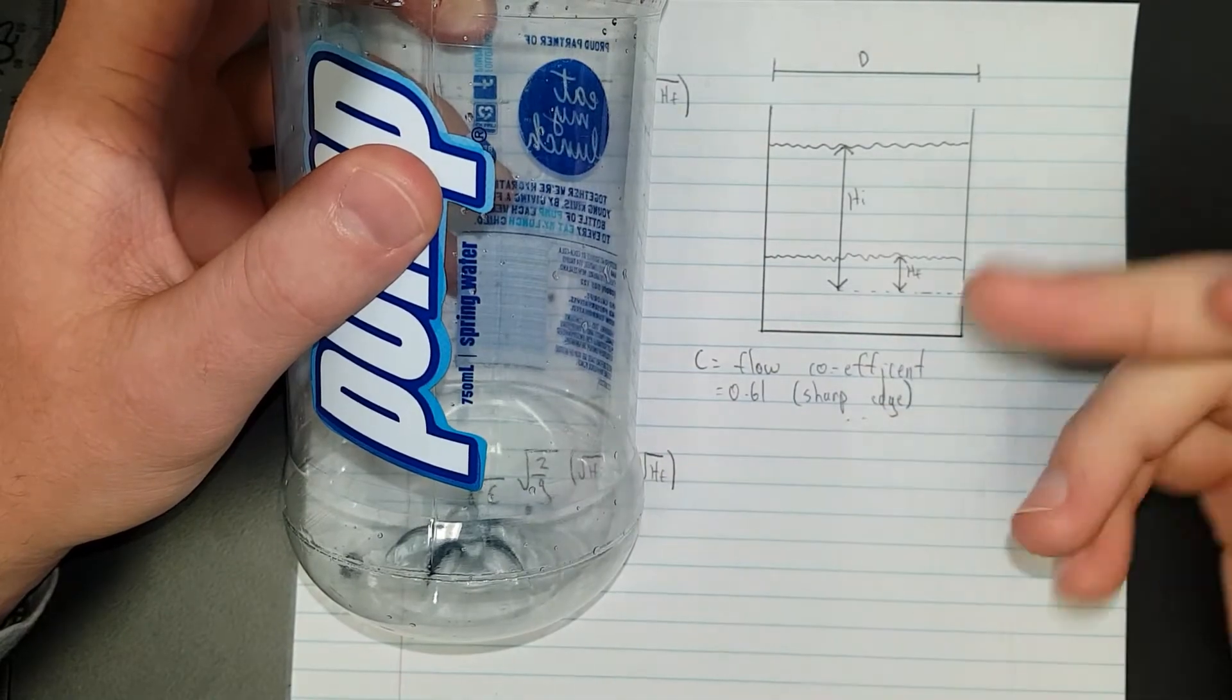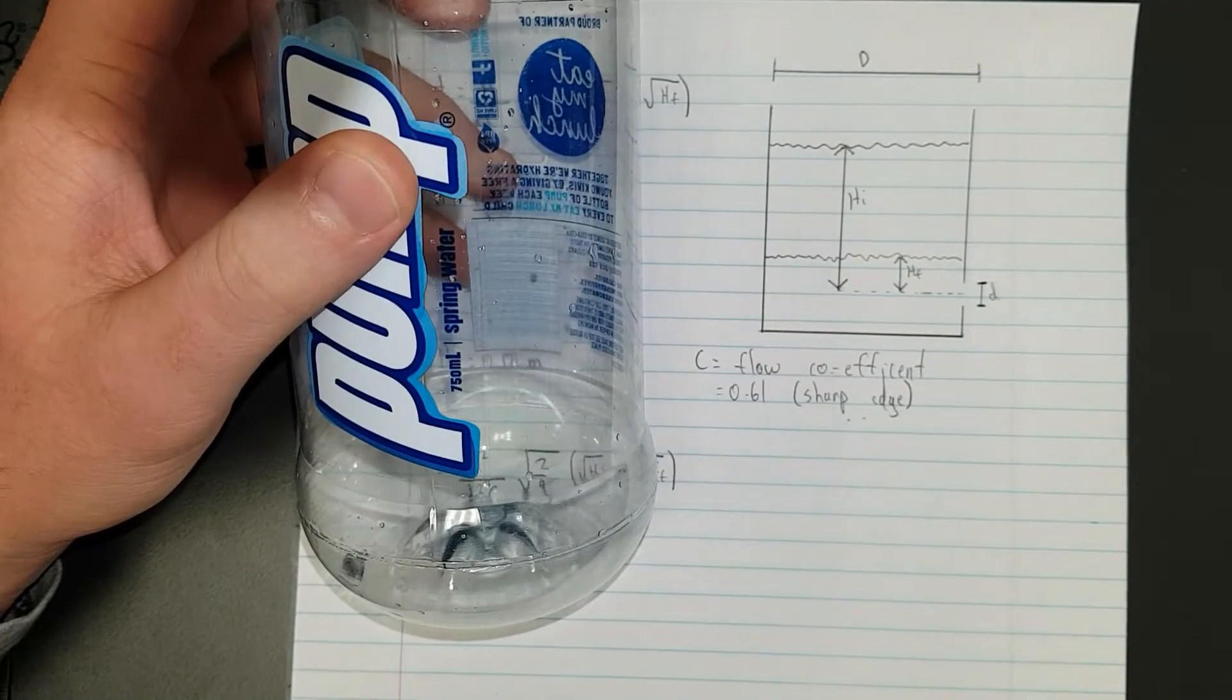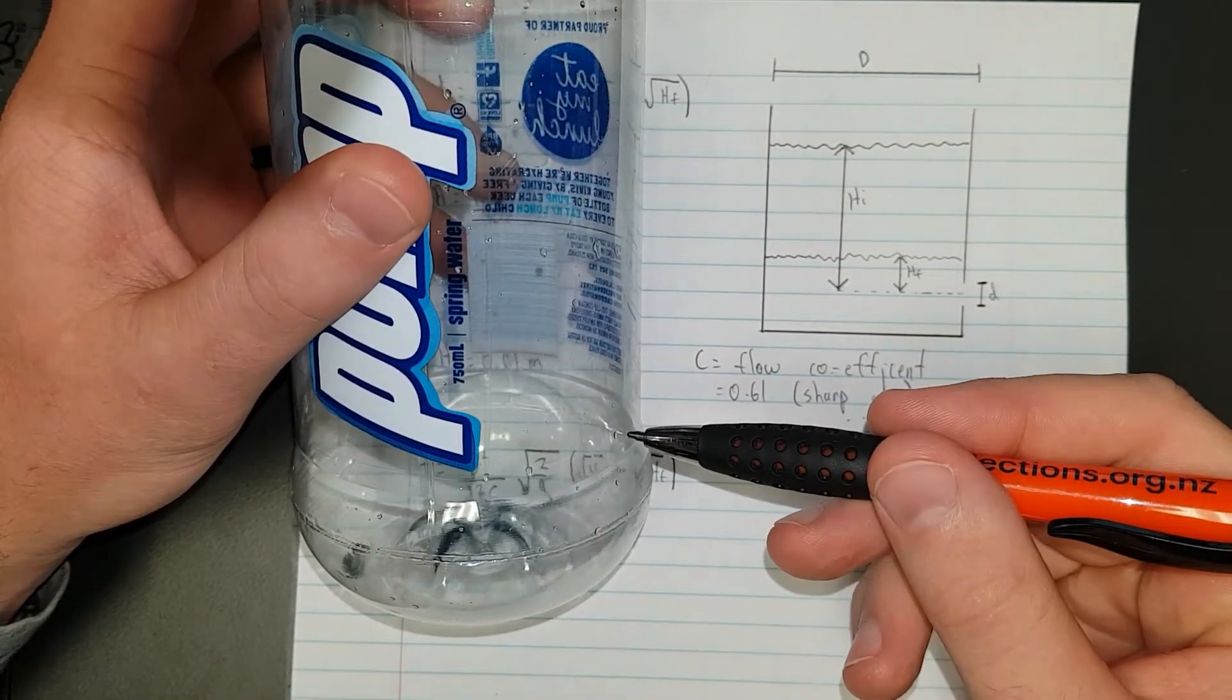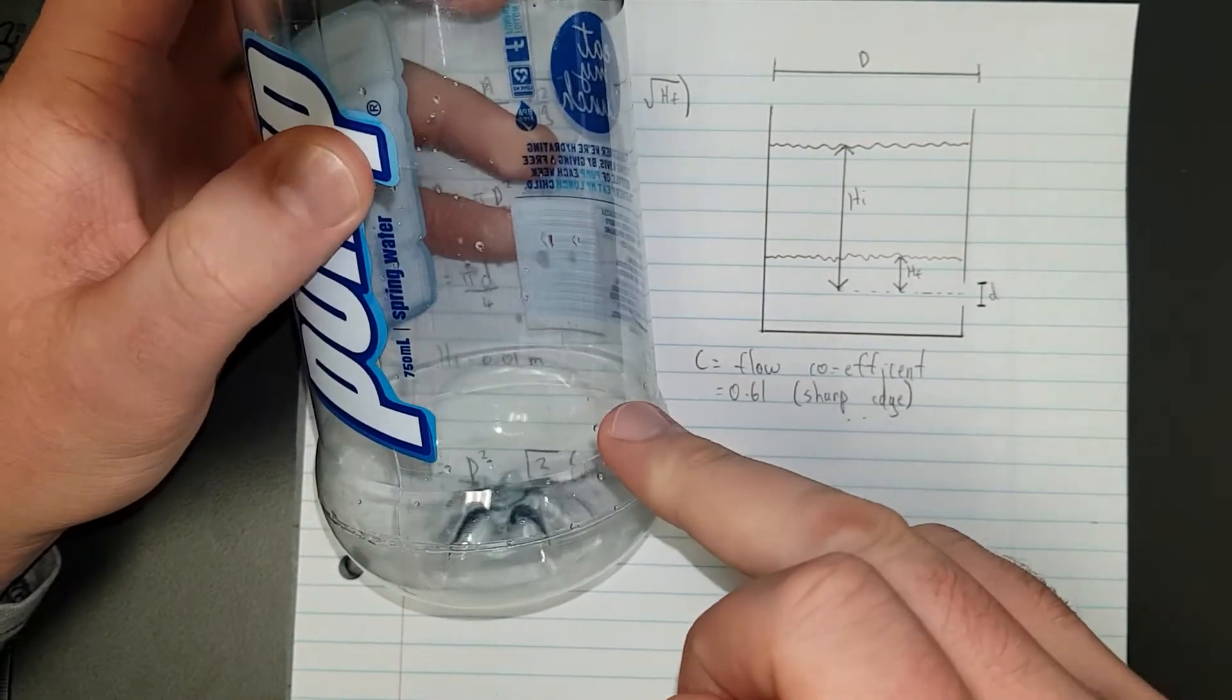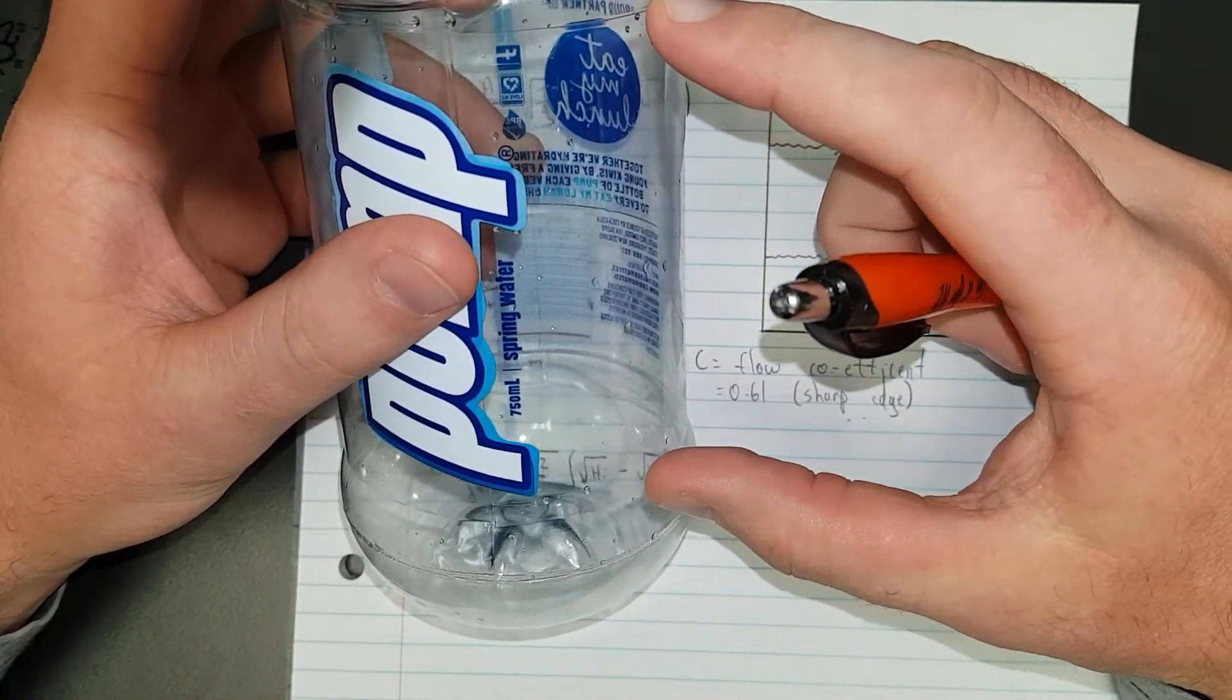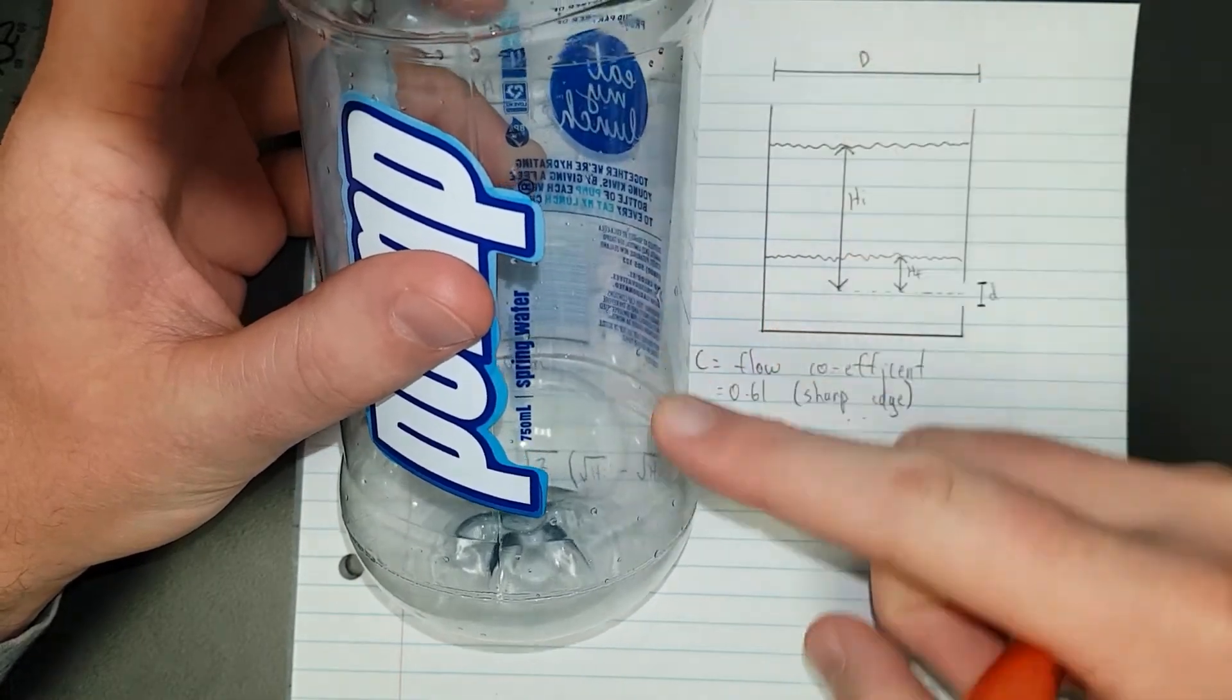Later on you'll see my experimental setup. I got a red hot screwdriver, pushed it into the water bottle to make a hole, and then I filled it up for different heights and investigated the relationship between how long the water took to empty out.